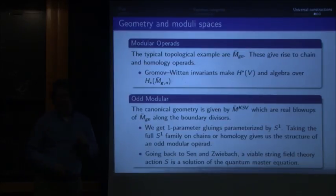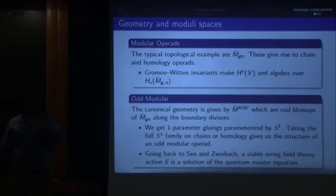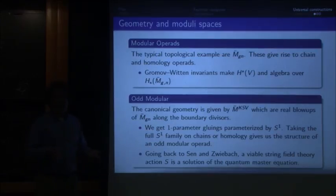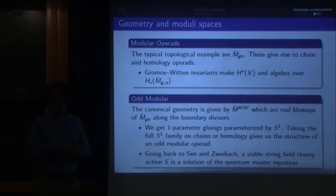And then Gromov-Witten invariants give me a functor between this modular operad and the standard structure of N and V. I know this is an algebra over this operad. And what does it buy me? It buys me recursion relations for Gromov-Witten invariants — partial differential equations for the potential. Any equation I can find in H-star, I can then apply this.